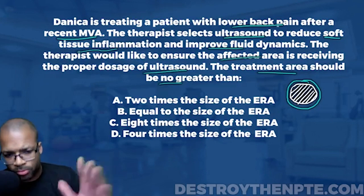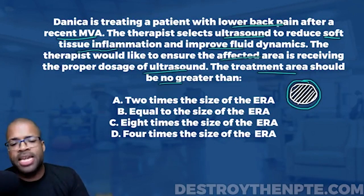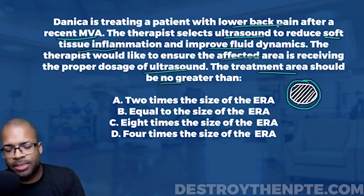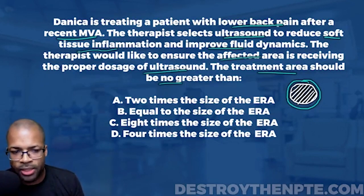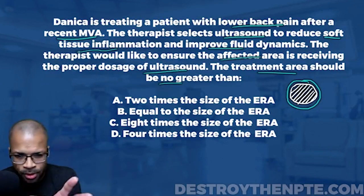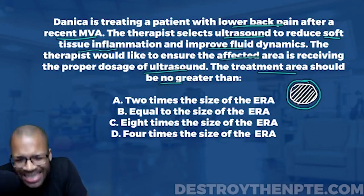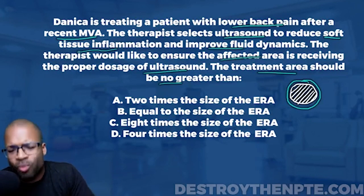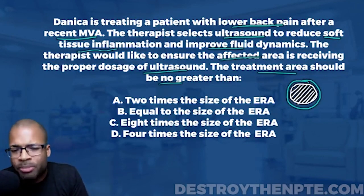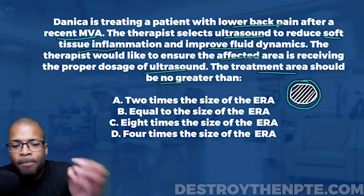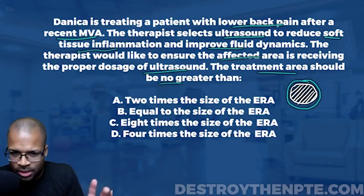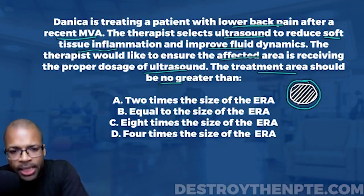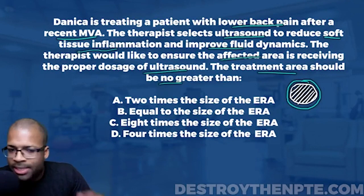Let's go through the answer choices. A says two times the size of the ERA. I like this answer because ideally the treatment area should be about two to three times the size of the ERA — you don't want to go any smaller, as you risk burning the patient. However, the question doesn't ask for the ideal; it asks for the maximum — no greater than. So A is not our final answer.